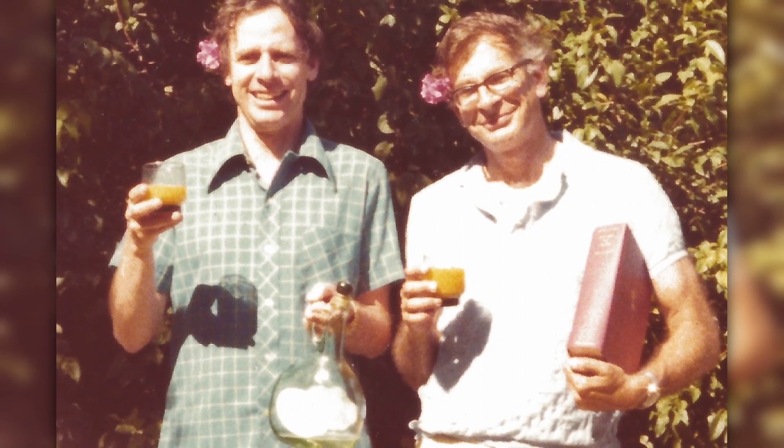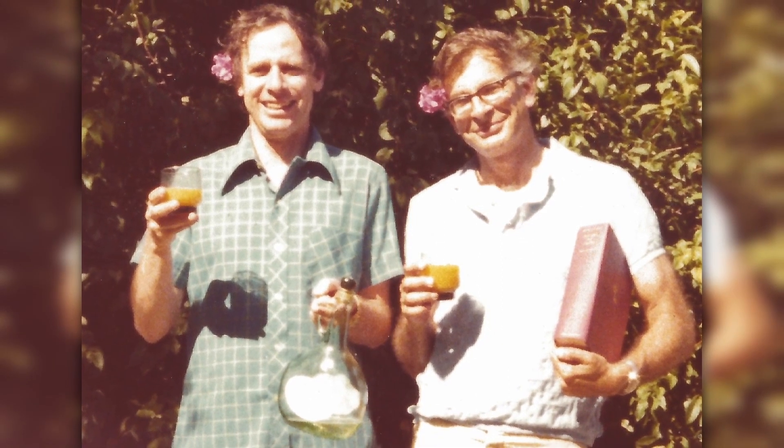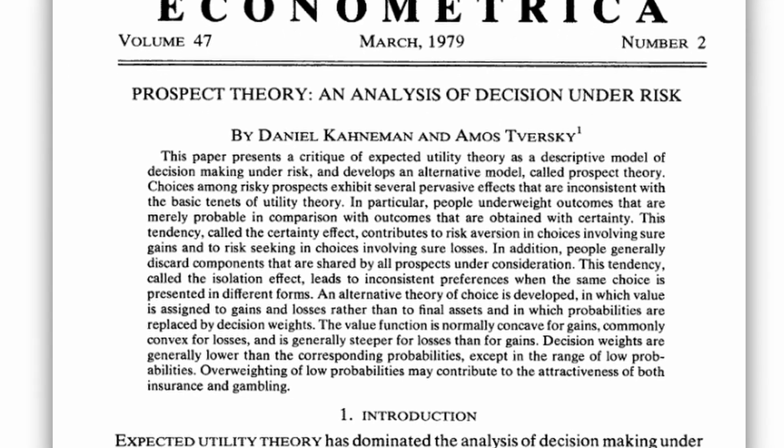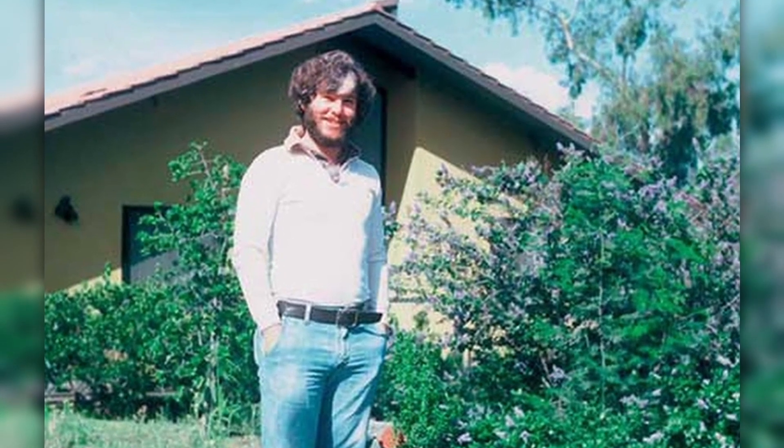That brings us to the 1970s, where Kahneman and Tversky continued to work together, now from the United States. Kahneman was at the University of Chicago and Tversky was at Stanford. During this decade they collaborated extensively and published many papers together. Most importantly, in 1979 they released a very famous paper called Prospect Theory, which would go on to be one of the most important papers in all of behavioural economics, laying the groundwork for concepts like loss aversion and reference-dependent pricing. It was also during this time that Kahneman met a young economist named Richard Thaler.